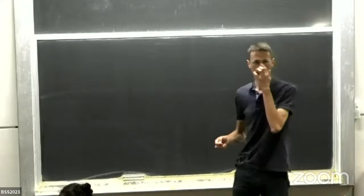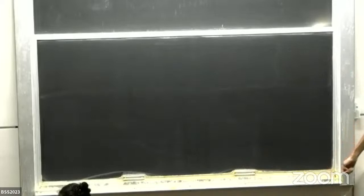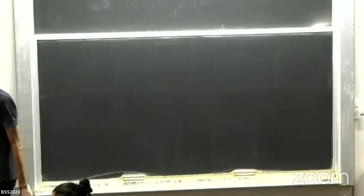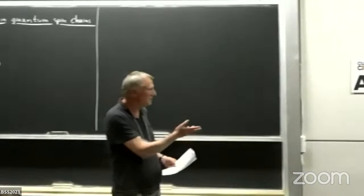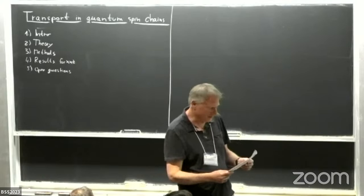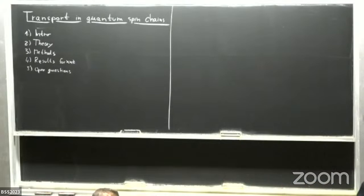Unfortunately, some of you who know me know I find it very difficult to pronounce a typical name. Marco Žnidarič — the Z with the hat is Ž, and the C with the hat is Č. And the university is in Slovenia: Ljubljana. Okay, thank you. So welcome everyone.